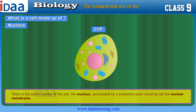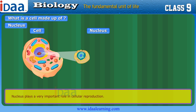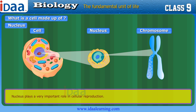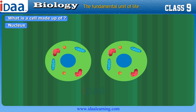The nucleus is the control center of the cell, surrounded by a protective outer covering called the nuclear membrane. The nucleus plays a very important role in cellular reproduction. In this process, a single cell divides and forms two new cells.